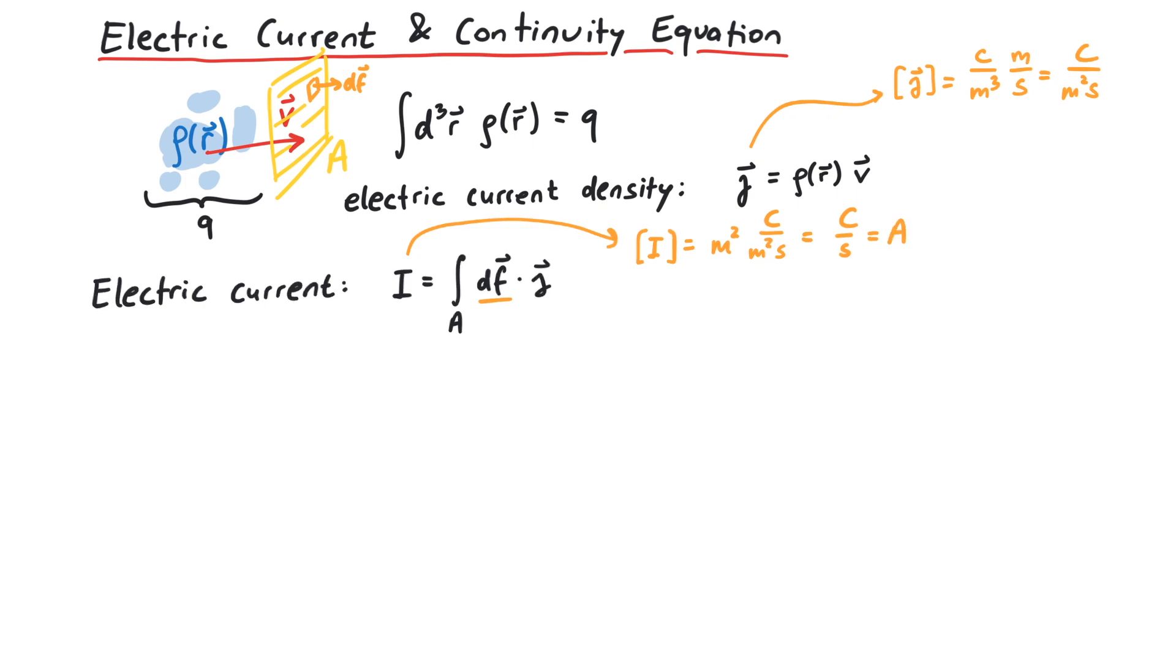Now let's talk about the continuity equation. This equation connects the charge density rho and the current density j. We start with the conservation law for electrical charges. If we take a charge q in some volume v, the only way that q can change is by flowing through the surface of v.